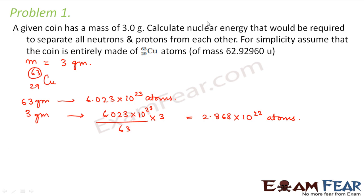Now we have to calculate the amount of nuclear energy to separate the neutrons and protons from each other. The energy required to separate nucleons from each other is the binding energy. So we have to calculate binding energy here, and for that we need to calculate the mass defect.